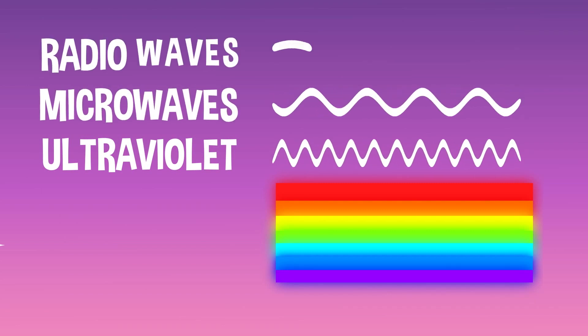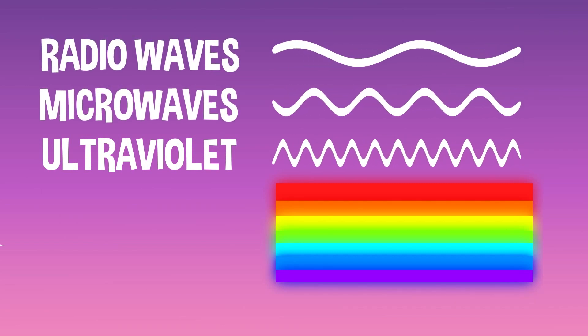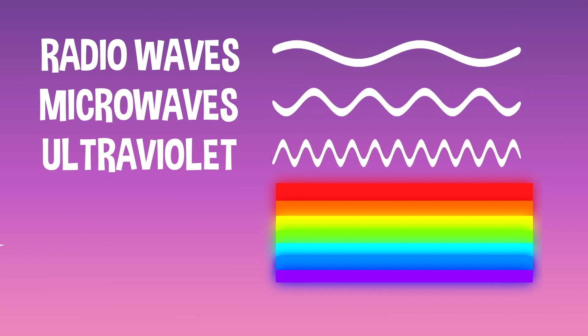Most light is actually invisible to us, like ultraviolet light, microwaves, or radio waves, all of which are forms of invisible light that our eyes can't see.